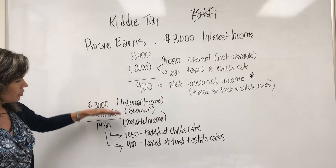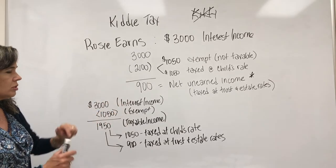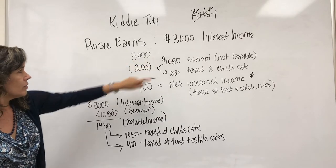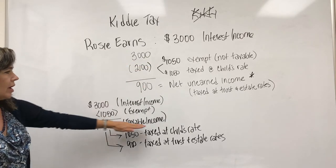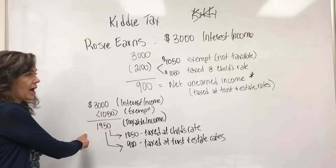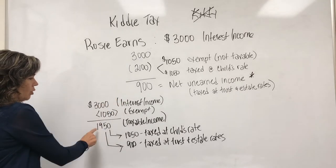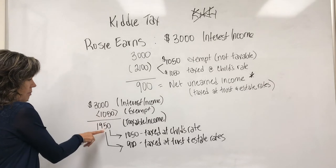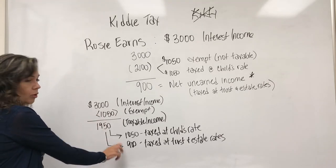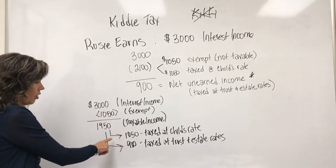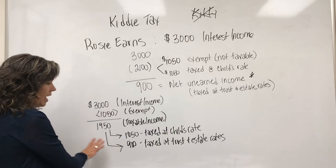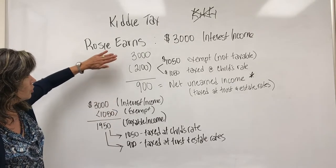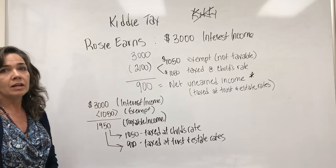Let's look at it a different way — same exact calculations, just turned differently. We have $3,000 of interest income. We subtract the exempt amount of $1,050, leaving taxable income of $1,950 — that's the total amount taxed. This $1,950 is taxed at two different rates: the first $1,050 is taxed at the child's rate, and anything above that is taxed at the trust and estate rates. These are two views of the exact same set of facts. Good luck with kiddie tax.